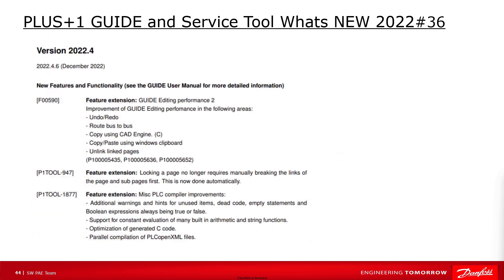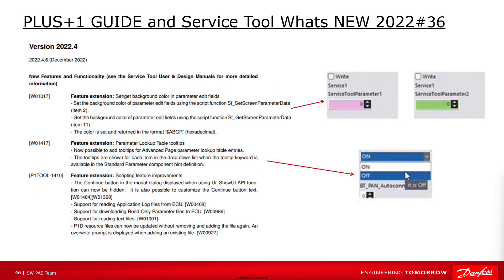Now we are getting to the latest release in 2022, which is called 22.4. In this version, no new features have been added — only some feature extensions like guide editing performance improvements in the areas of routing, bus, undo, redo and copy-paste, and some new warnings and optimization in the PLC compiler area. Same for the service tool release 22.4 where no new features have been added, but some improvements like the possibility to set and get the background color of parameter edit fields, script function improvements, and a new tooltip which can be used for parameter lookup table entries.